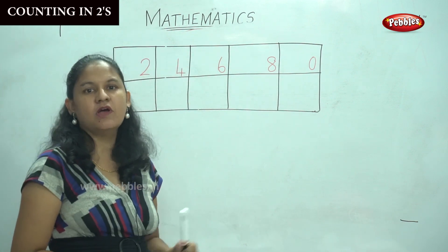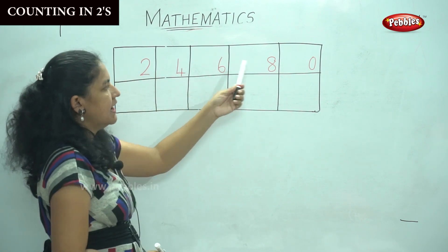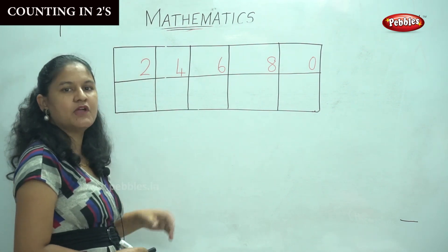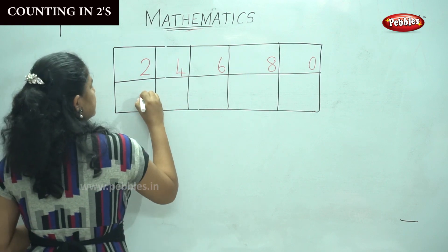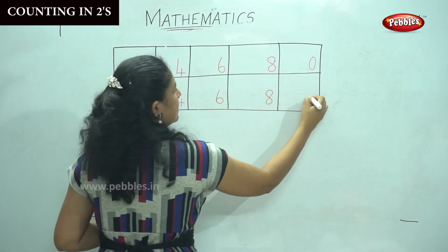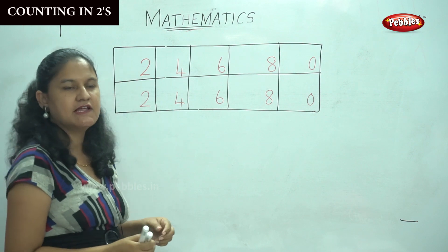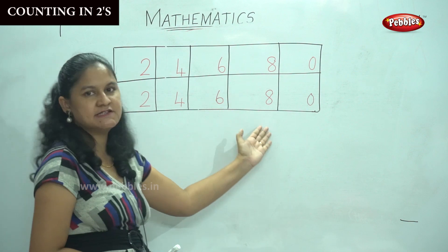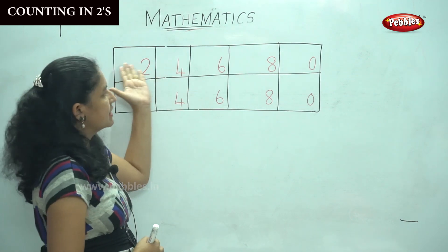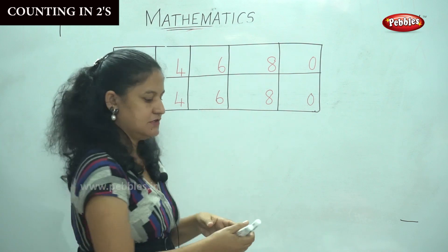So shall we see this again? In the first row you will write the counting in twos: two, four, six, eight. And in the last column you will write zero. Then in the next row again we are going to write counting in twos: two, four, six, eight, and in the last column zero. So again we write the skip counting in twos: two, four, six, eight.